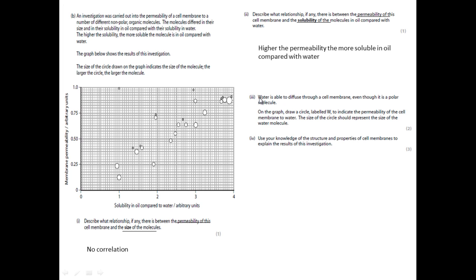Part three is a little bit more difficult. Water is able to diffuse across the cell membrane even though it is a polar molecule. On the graph, draw a circle labeled W to indicate the permeability of the cell membrane to water. The size of the circle should represent the size of the water molecule. It is saying, it says in the first sentence, water is able to diffuse through the cell membrane. That must mean it has a very high permeability, therefore it must be somewhere at the top portion of the graph. If it is high permeability, it must be near the top somewhere. If you then look at the solubility in oil compared with water, well clearly, water is not very soluble in oil.